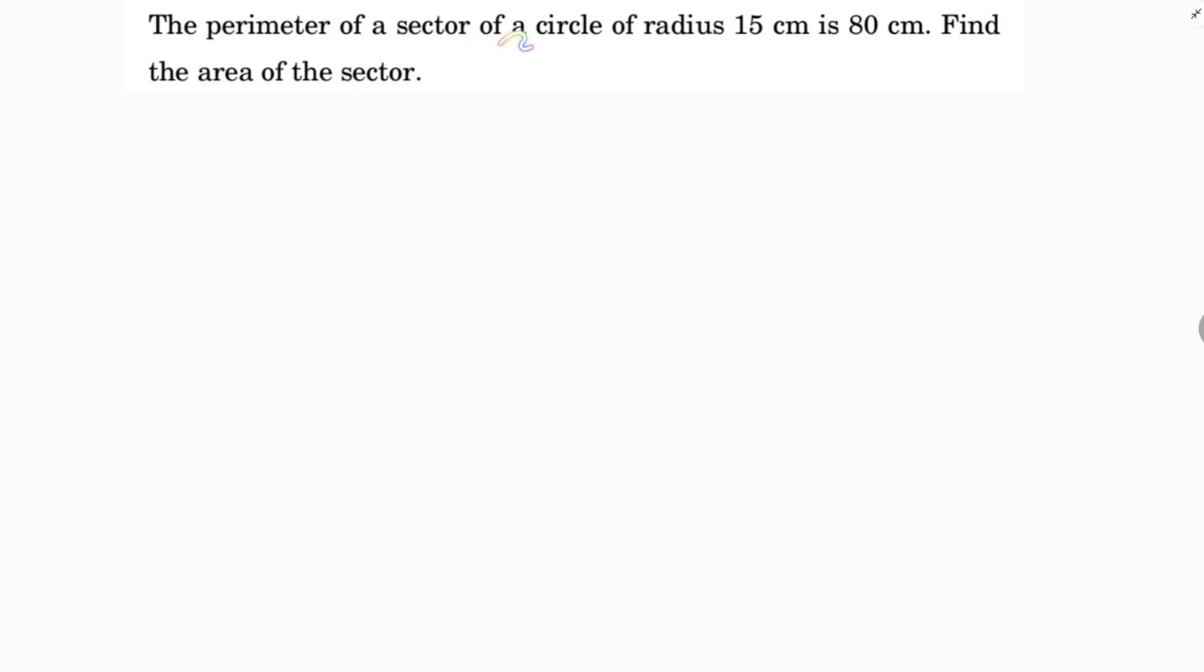The perimeter of a sector of a circle of radius 15 centimeters is 80 centimeters. Find the area of the sector. So here, if I take this is a circle.